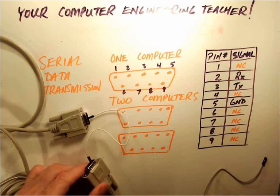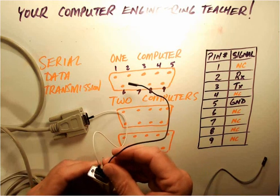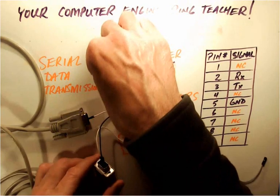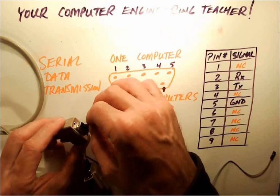Then what we're going to do is we're going to take their pin 3, which is their transmit pin. And they're going to connect that to this receive pin, so pin 2.